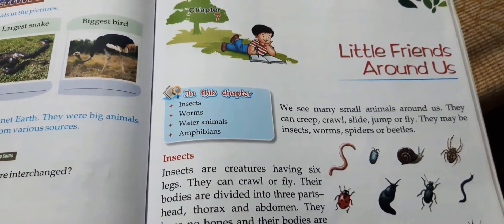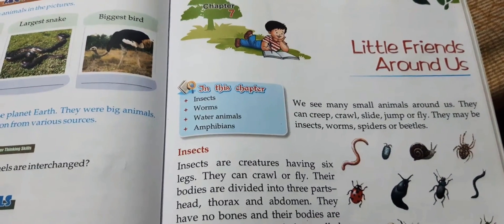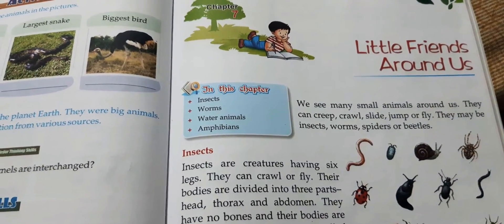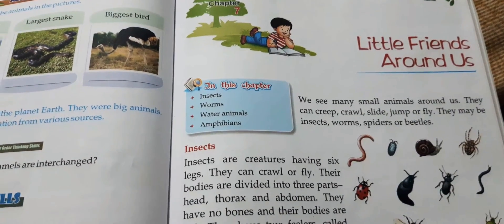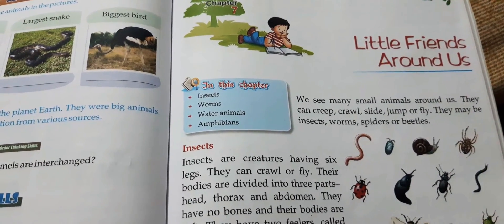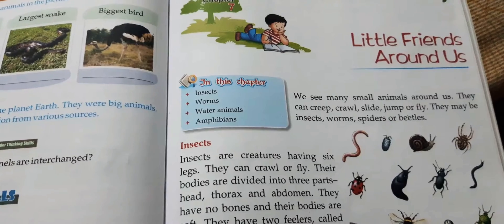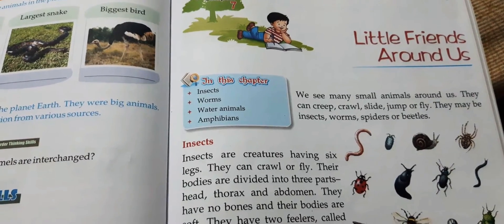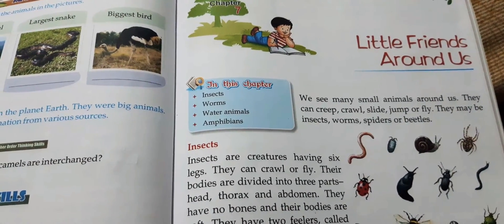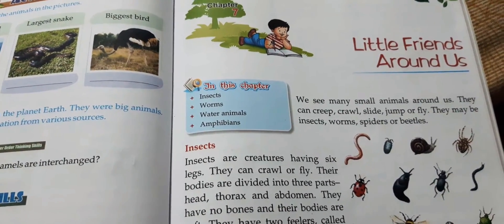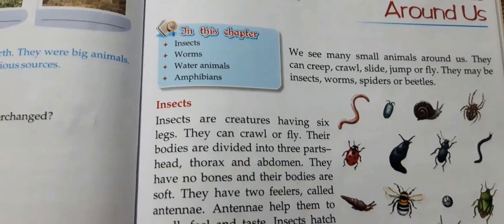Students, in the previous chapter you have studied that animals are of different sizes — some are big, some are small. In this chapter you will study about small animals like insects, worms, water animals and amphibians. So let's come on to the chapter.